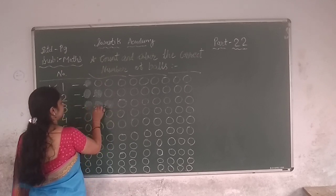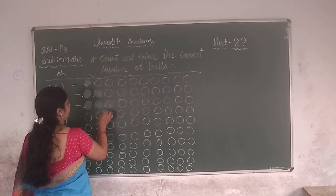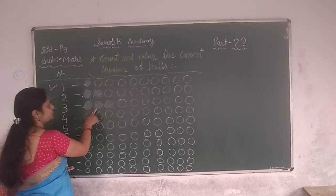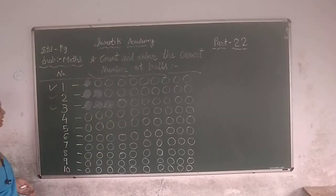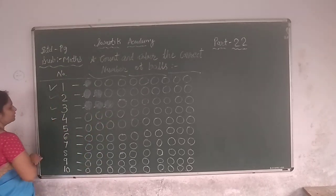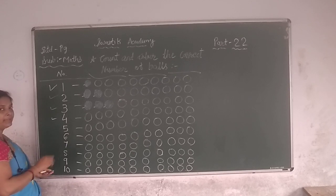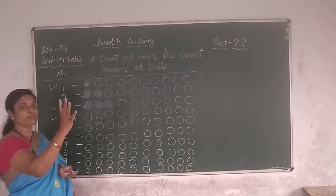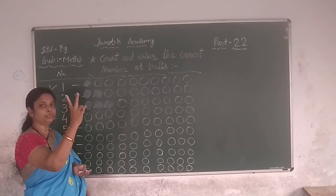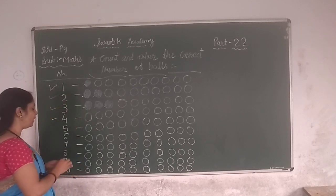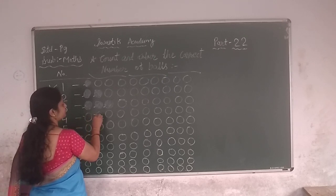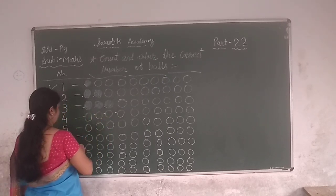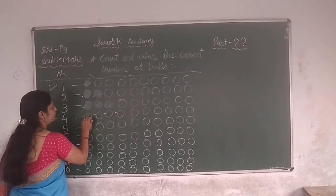And 3 numbers. Okay, go back: 1, 2, 3. Next, number 4. So colour: 1, 2, 3, 4. 4 — colour right here: 1, 2, 3, 4.